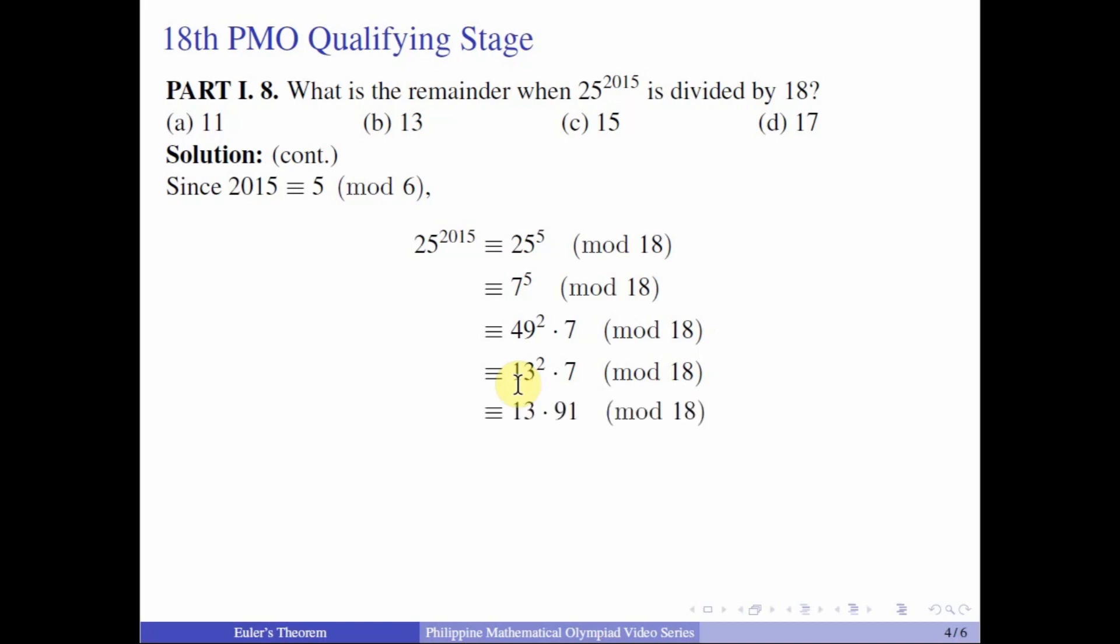So you have 13 times 91. And then we can just take the remainder of 91 when divided by 18, which is equal to 1. And so we end up with 13 mod 18. And so that means that 25 raised to 2015 is congruent to 13 mod 18. So the answer is letter B, 13.